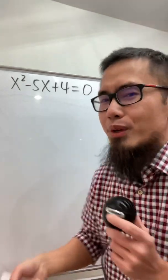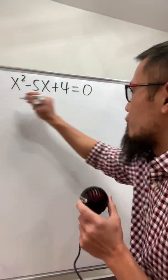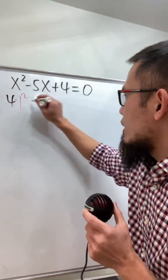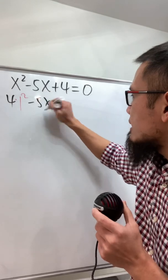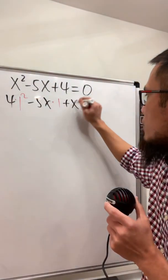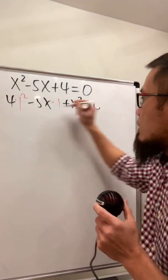Quadratic equation in terms of 1. Here we go. Let's look at this and put the 4 down first. We know 4 is the same as 4 times 1 squared, and then minus 5x times 1, and this is plus x squared. This is equal to 0.